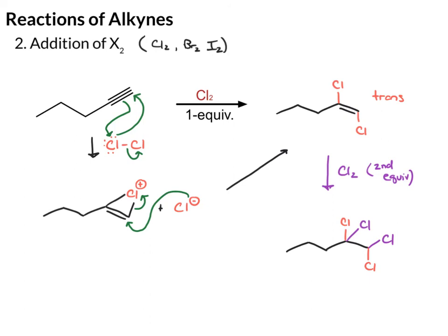Again, you can do this in two steps — adding a first equivalent and then a second equivalent — or you can just take your starting material and add Cl2 in excess.